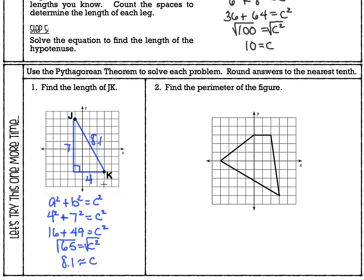Okay, this last example — this time we're going to find the perimeter. Remember that finding the perimeter means finding the distance around the outside of the figure. We're lucky because one of our sides is just a horizontal line, so we can just count those spaces and at least we've got that first side done. For all the other sides we're going to make right triangles and use the Pythagorean Theorem just like we did in the first two examples.